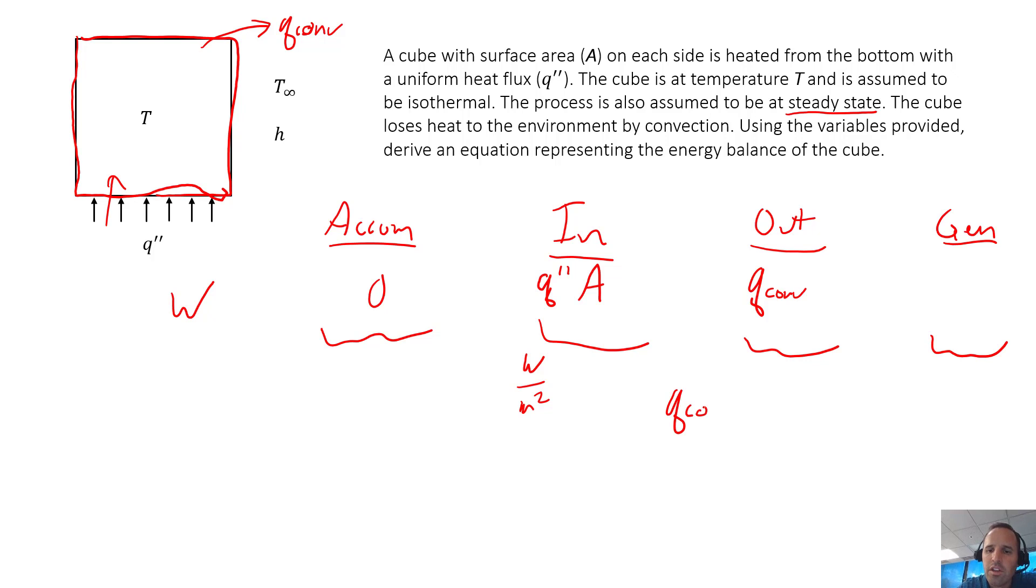Instead of just plugging in q convection, we can plug in the definition of Newton's law of cooling. We have q convection equals hA, and because energy is leaving our cube, we use T, our surface temperature, minus T infinity, our bulk fluid temperature.